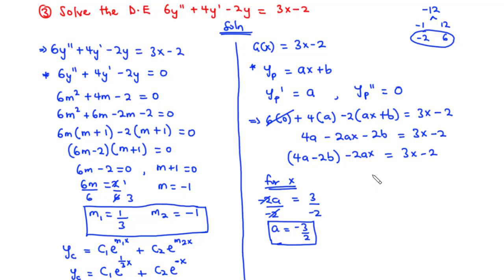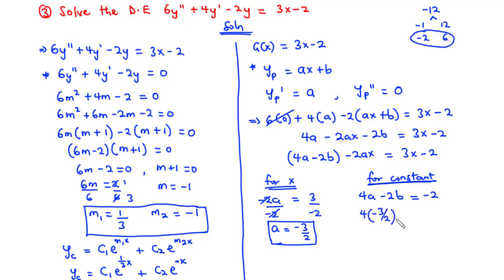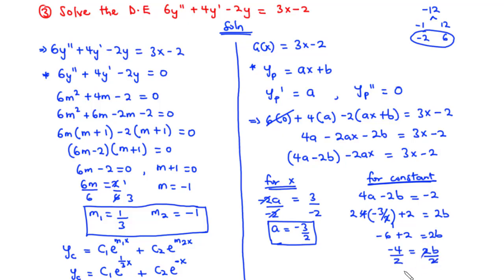Comparing constant coefficients: 4a − 2b = −2. Substituting a = −3/2: 4(−3/2) − 2b = −2, which gives −6 − 2b = −2. Transposing: −2b = −2 + 6 = 4, and moving −2b to the right gives 2b = −4 + 2… simplifying to −4 = 2b, so b = −2.